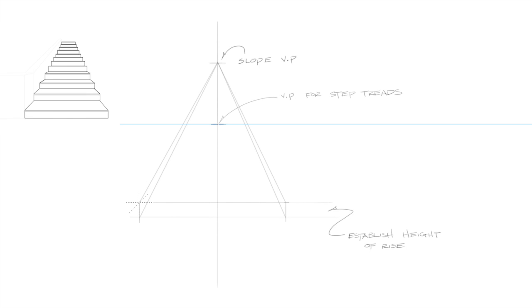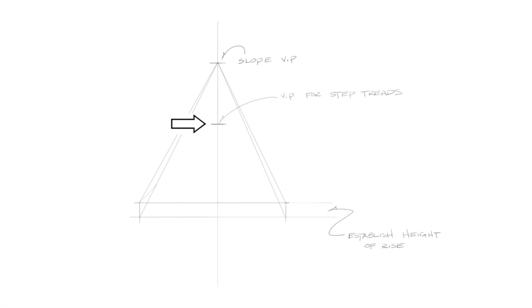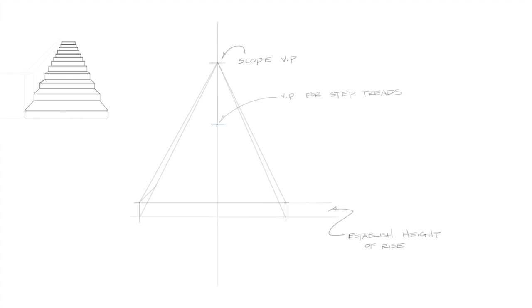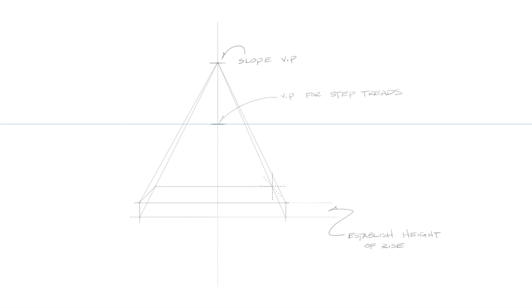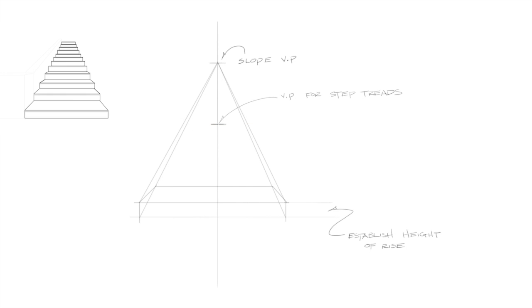Now let's draw the top or the tread of the first step. To do this, we'll draw a line from the corner of the step towards the vanishing point of the step treads. To connect the two lines, where this line intersects the bottom slope line, we'll draw a horizontal line to the other side. Again, we'll draw a line from the corner of the first step towards the vanishing point of the step treads to connect the two lines.